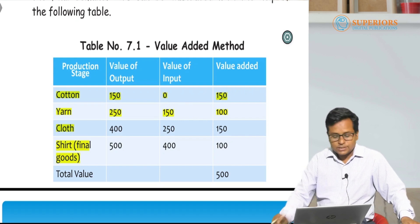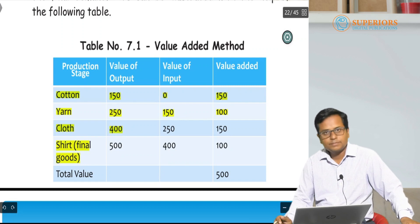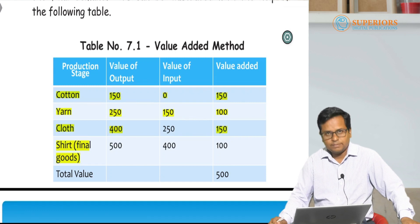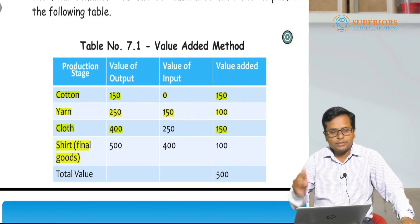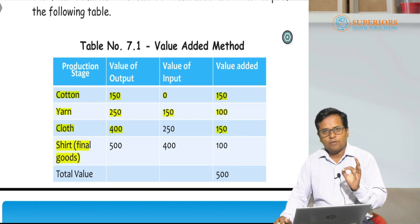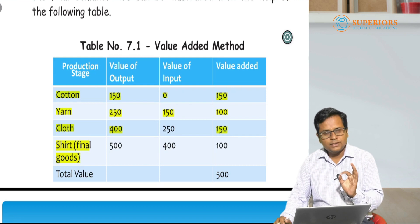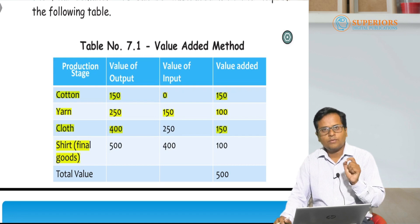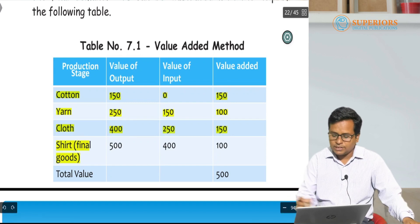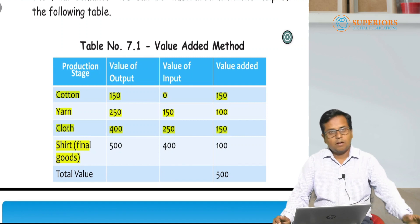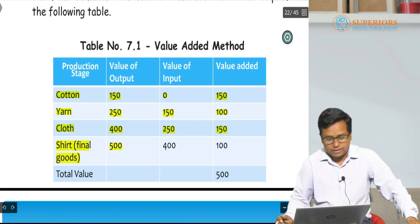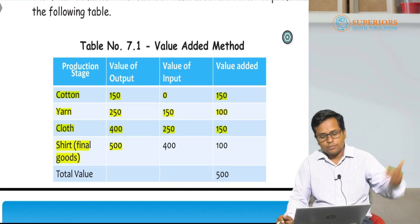When yarn is converted into cloth, its value becomes rupees 400 at the third stage of production. The value added is rupees 150. We obtained this by deducting the value of input: 400 minus 250 equals 150.